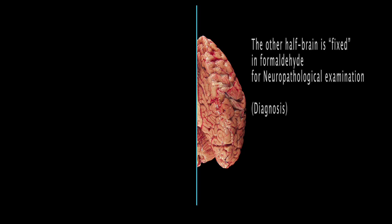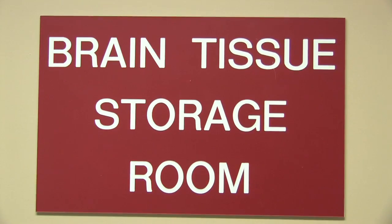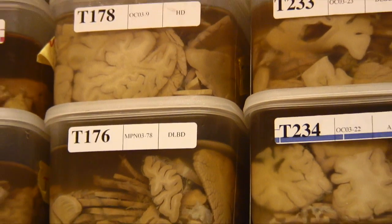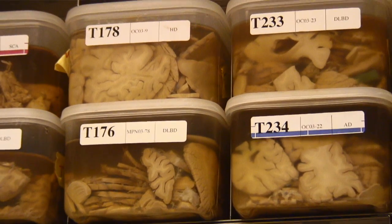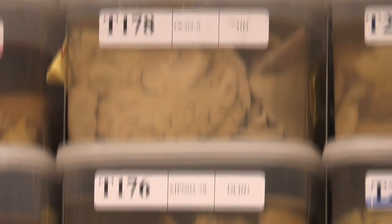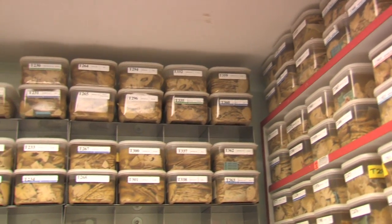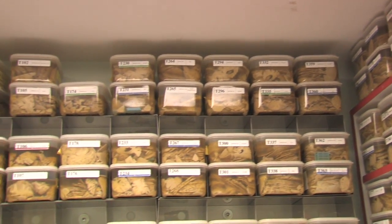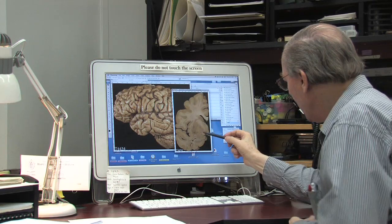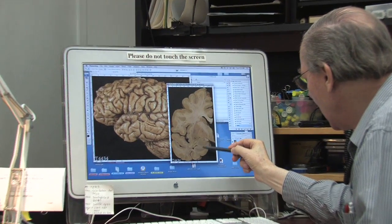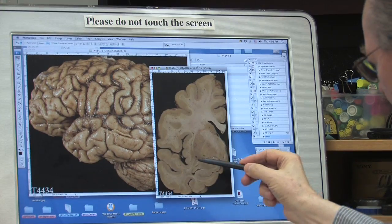The other half is fixed and used for the neuropathological examination. This is from the half that we use for the diagnosis. We cut very thin — about three millimeters — to make sure to assess every part of it.